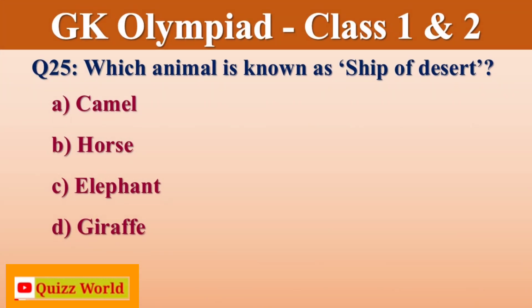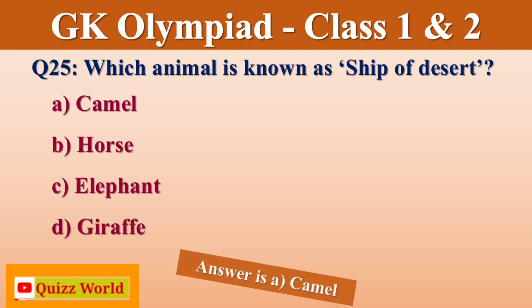Which animal is known as the Ship of the Desert? Camel, Horse, Elephant, Giraffe. Right answer is Camel.